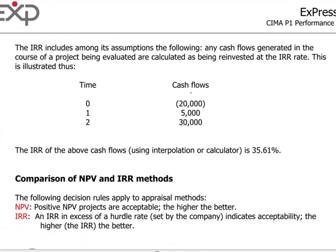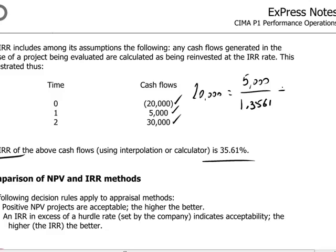Here's a numerical example: if at time zero we have an investment of twenty thousand dollars, in year one a cash flow of five thousand, and in year two thirty thousand, the IRR of these cash flows is thirty-five point six one percent. In other words, the investment amount of twenty thousand will equal the cash flows discounted at 35.61% — that is, five thousand in year one divided by 1.3561, plus thirty thousand in year two divided by 1.3561 squared. We leave it to the candidate to confirm this is correct.